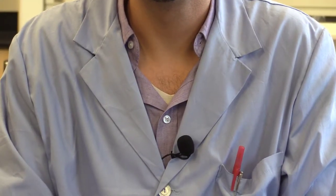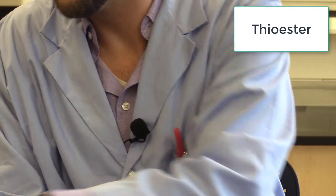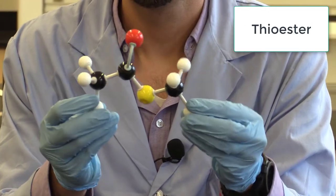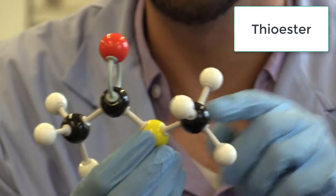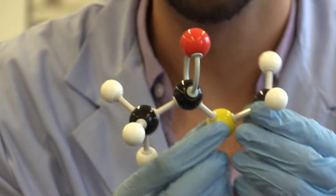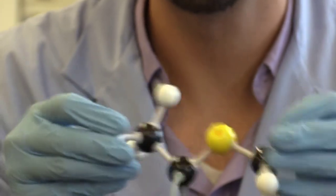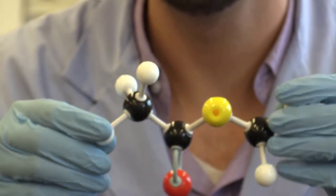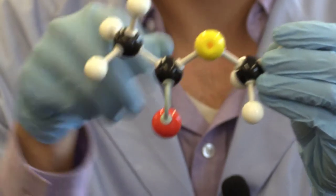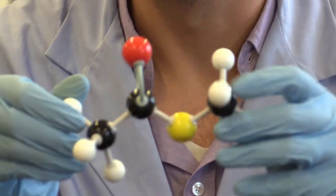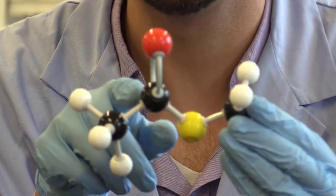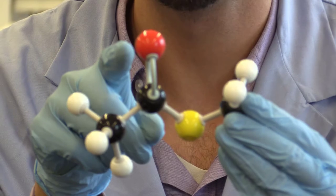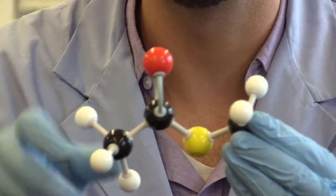Alright, so for our last structure we are going to do a thioester. So what we have for our thioester is a sulfur group bonded to a carbon bonded to another carbon, and what is not being shown in this structure is the two sets of lone pairs that would be on the sulfur. So the sulfur is going to be connected to two carbons, and then this second carbon is going to be double bonded to an oxygen molecule.